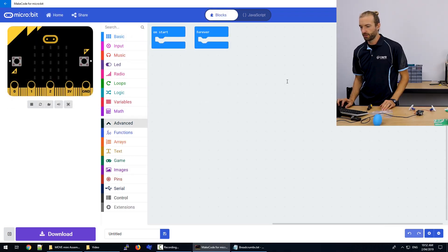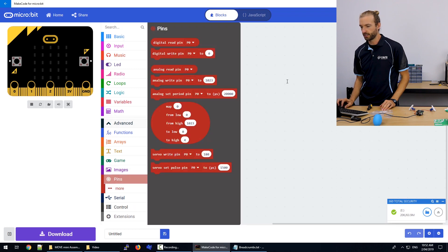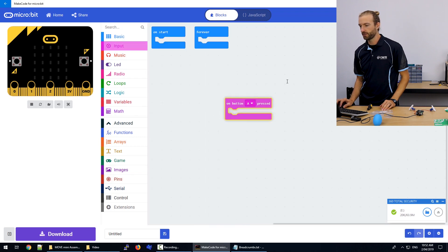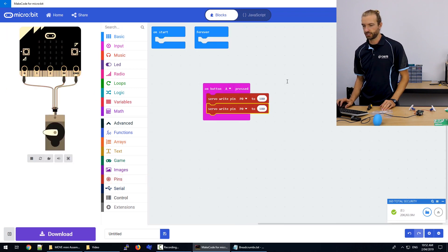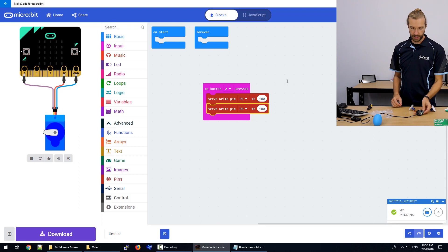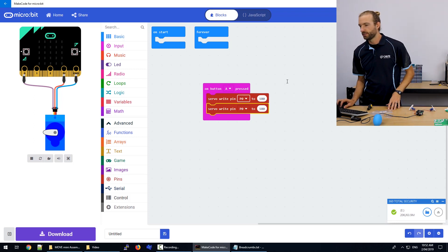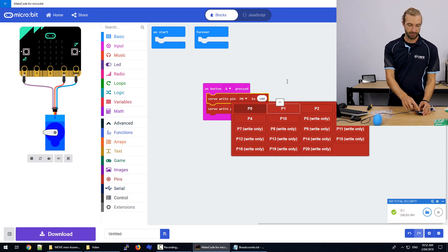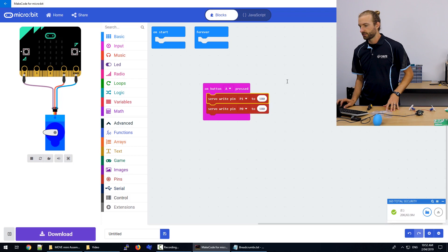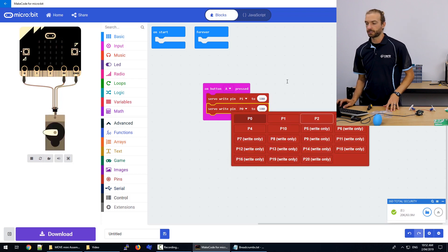We're going to go to advanced and pins and here we can find our servo pins. But first we're going to go to input, get a button A pressed block. Go back to pins and then we're going to use a servo write. We're going to use two servo write blocks, one for each servo. And the servos connected to P1 and P2. P0 on the servo light board goes to the five LEDs.